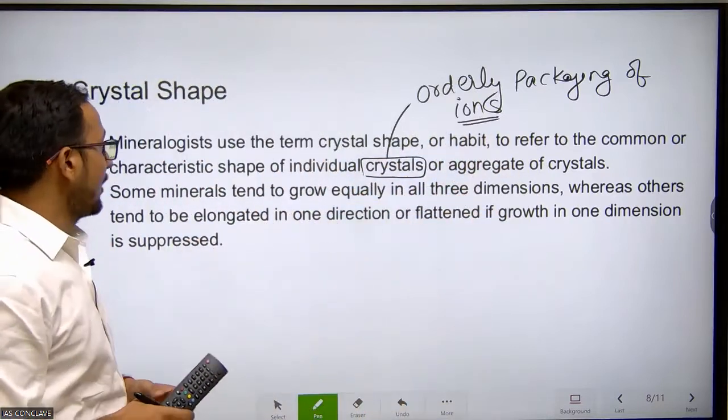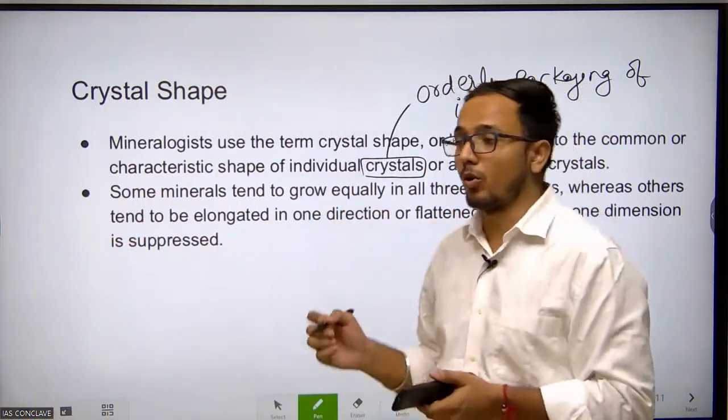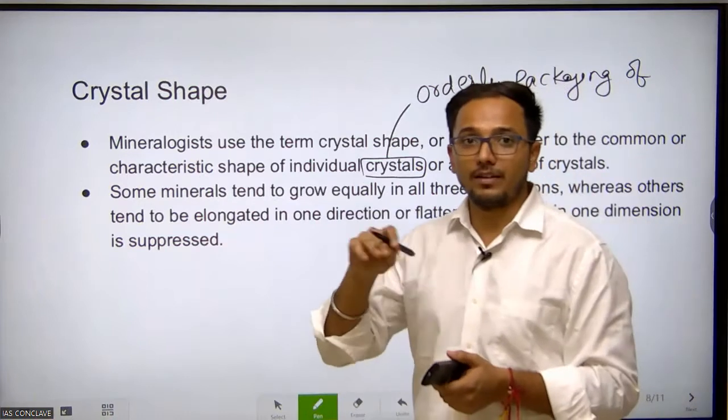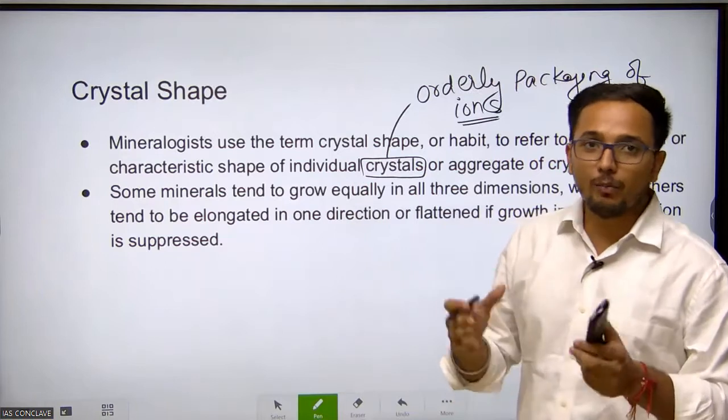Some minerals tend to grow equally in all three directions. Some minerals have the tendency to grow with flattened surfaces, some minerals have a cubical shape, some minerals have polygon shapes.